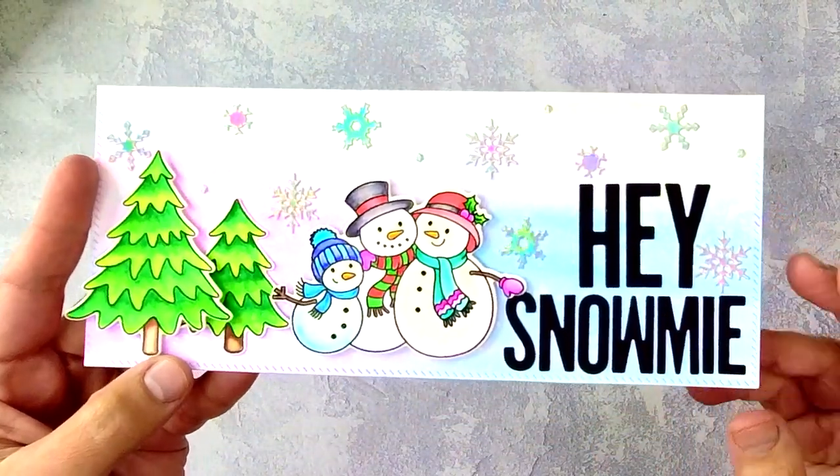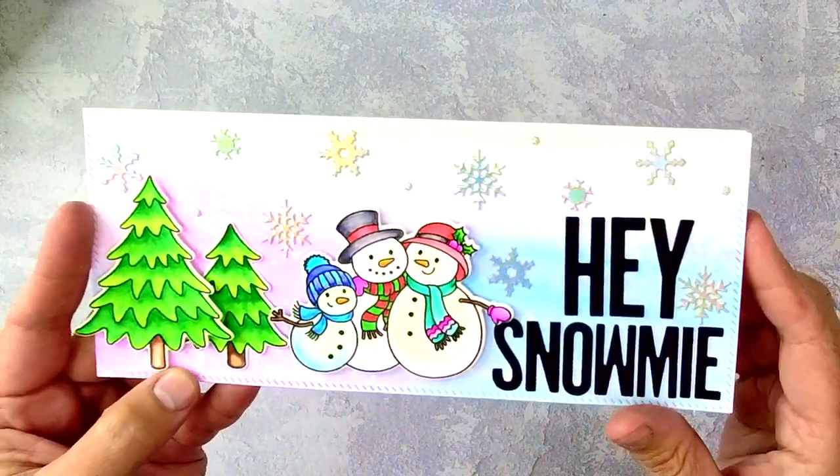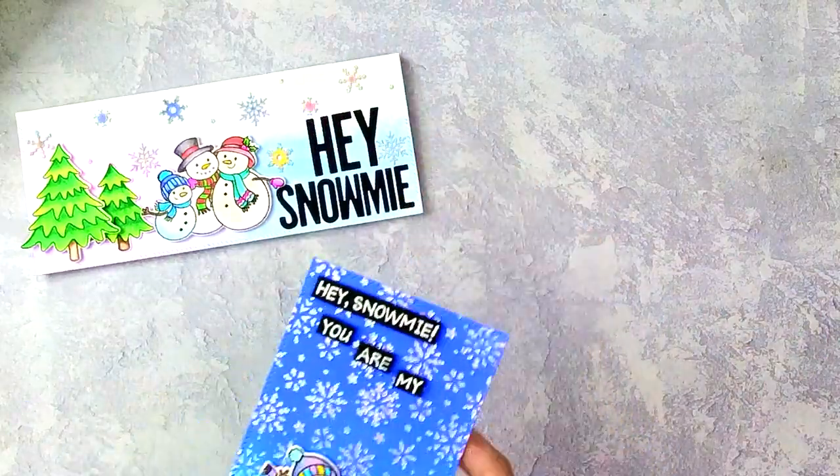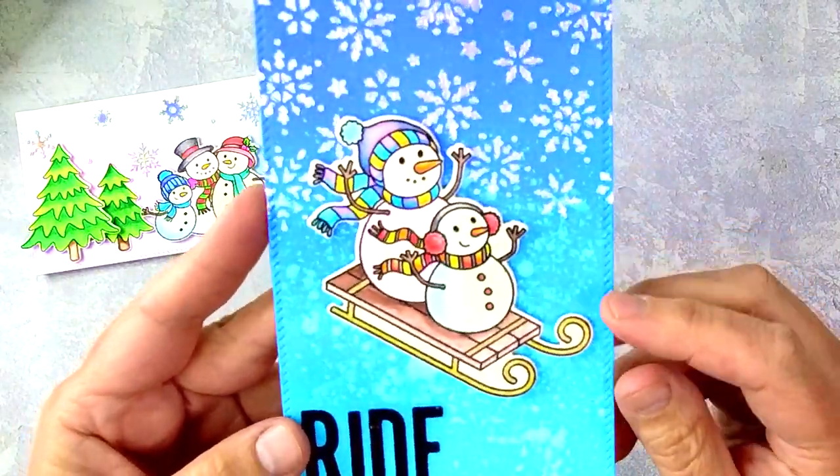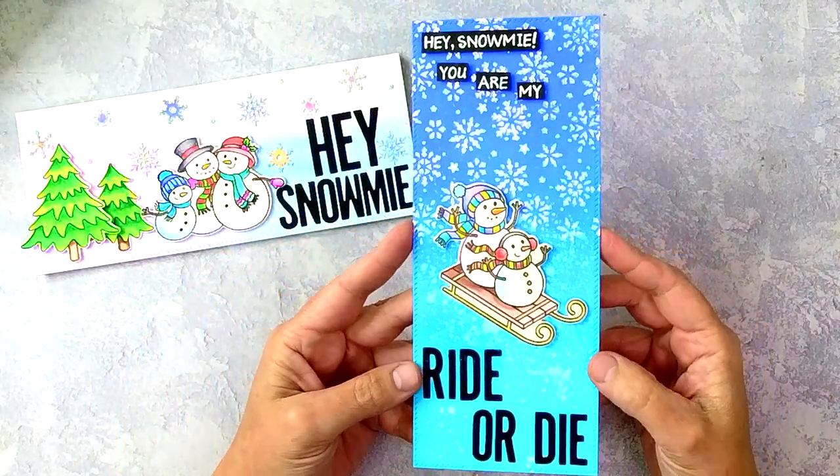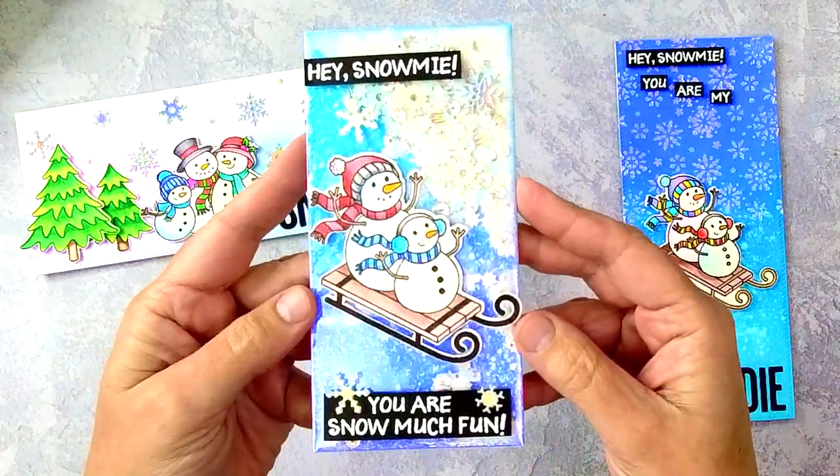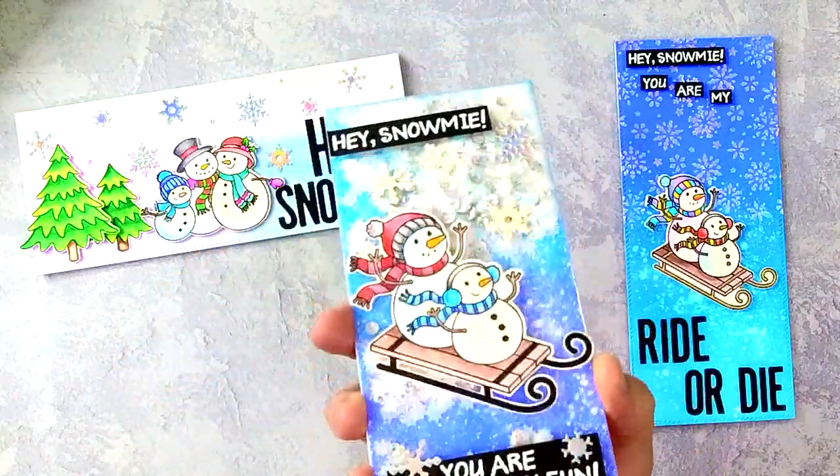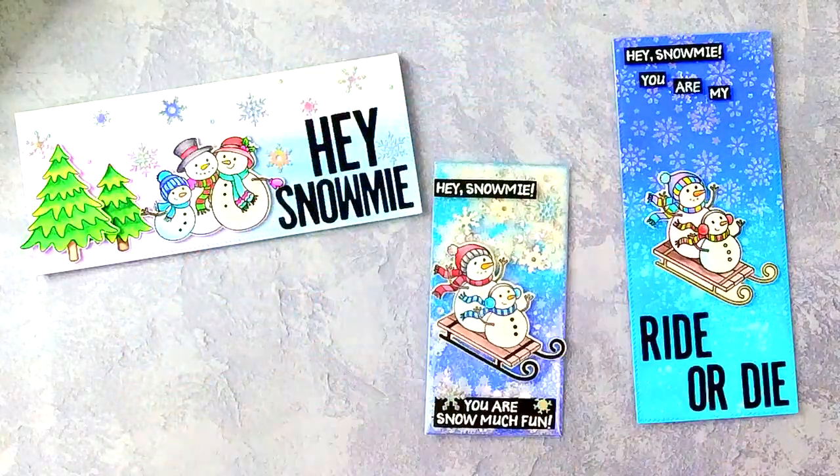Now here are some cards that I made using those dies and stamps that coordinate together. I also combined them with sentiments that I created from the Patterns and Prints and Backgrounds and Borders stamp sets. So that was really fun to be able to customize my own sentiments. And then I also used one of these to create a shaker card.